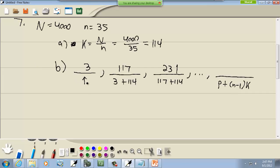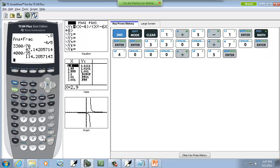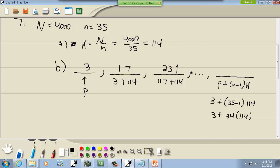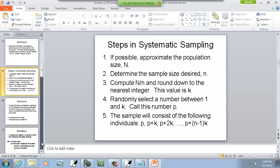So we're going to have 3 plus little n is 35. So we've got 35 minus 1 times K, which is 114. So we've got 34 times 114. So let's see what we get here. 3 plus 34 times 114. And we get 3,879. And that would be the answers to that problem.